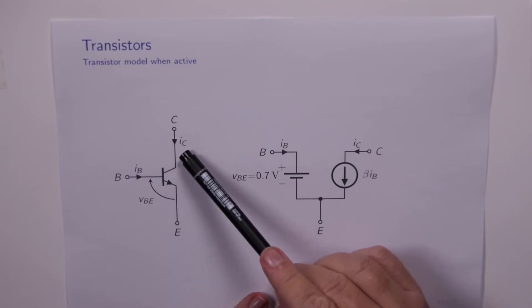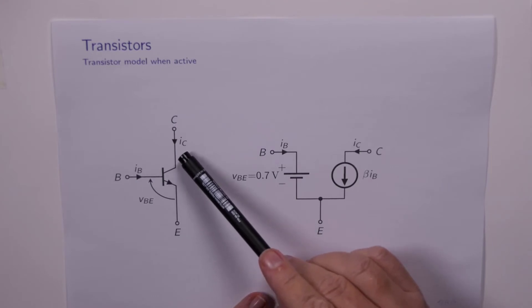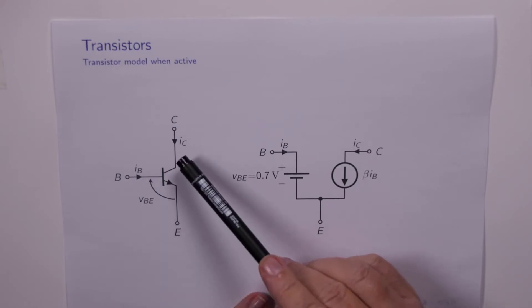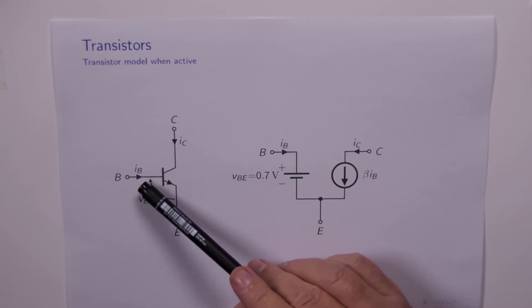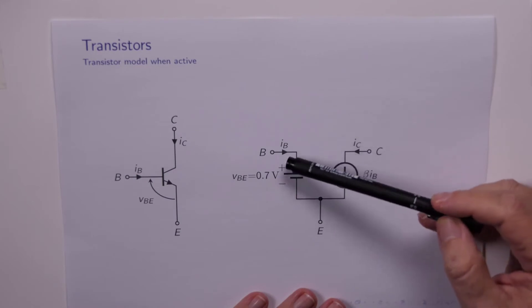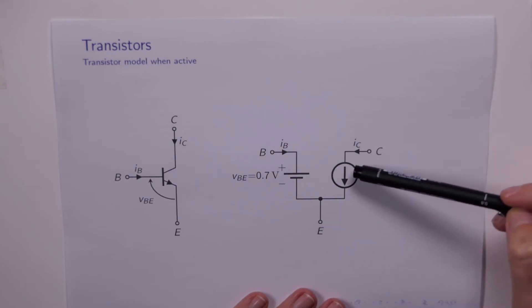The collector current is independent of the collector emitter voltage and instead IC is equal to beta times IB. So the collector current is determined by the base current. And of course that's equivalent to having a current controlled current source.